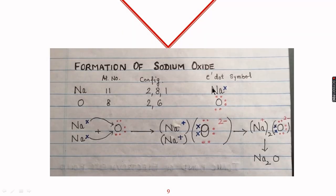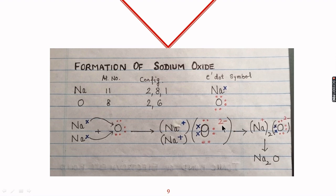For the formation of sodium oxide: oxygen needs two electrons to become stable, but sodium can give only one, so for one oxygen we need two sodium atoms. One sodium gives one electron and the second gives another. Both sodium atoms form Na⁺ ions and oxygen forms the O²⁻ ion. We write the compound as Na₂O.